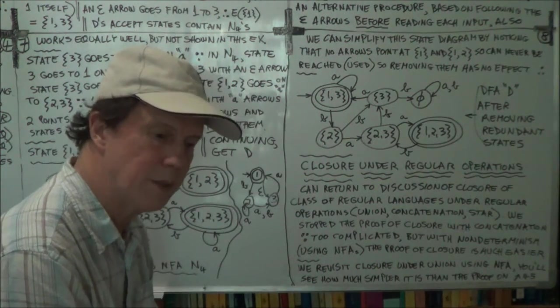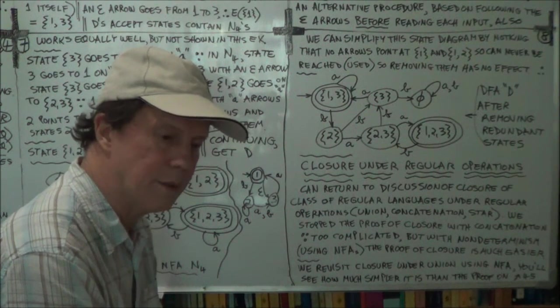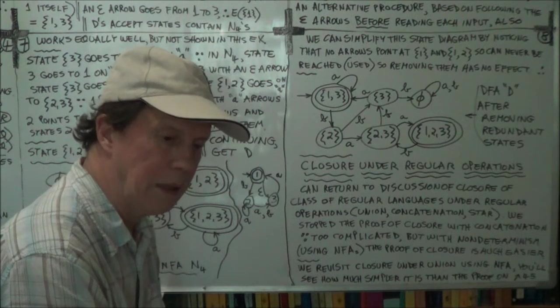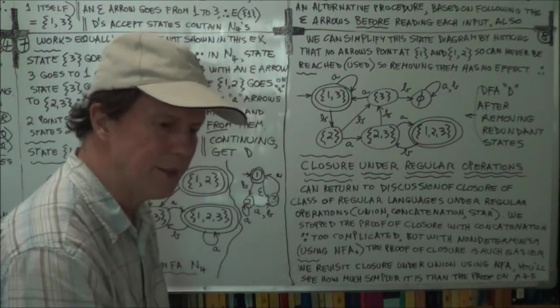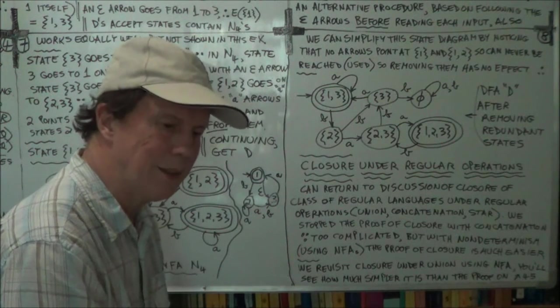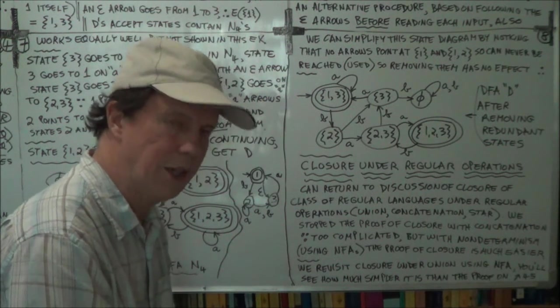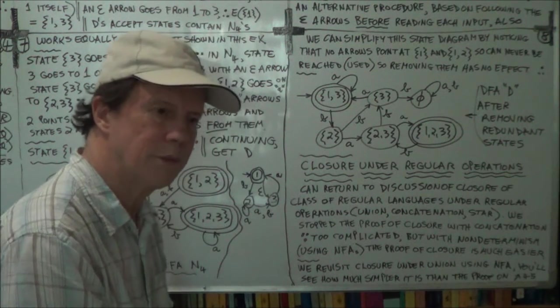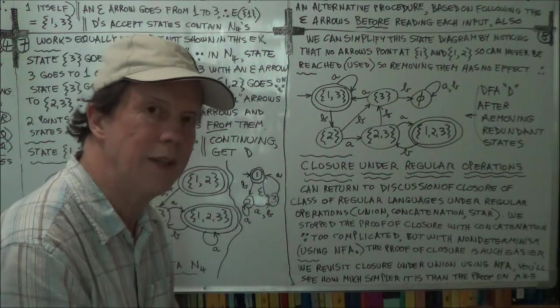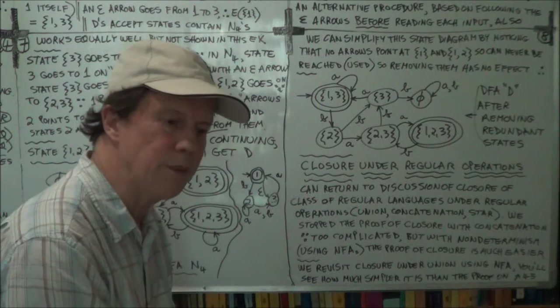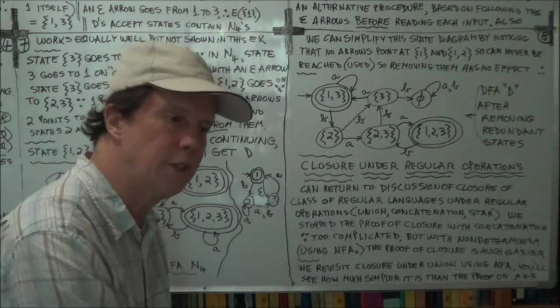So now we can go back to where we got stuck before. Remember, we were in the process of trying to prove that the class of regular languages are closed under the regular operation of concatenation. We got stuck in that. Well, now that we understand non-determinism and NFAs, we can use that knowledge now to return to that proof and continue on.